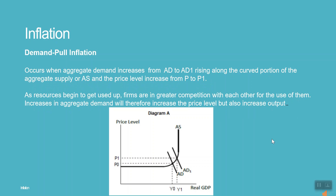Demand-pull inflation occurs when aggregate demand increases from AD to AD1, rising along the curved portion of the aggregate supply, or AS, and the price level increases from P to P1. As resources begin to get used up, firms are in greater competition with each other for the use of them. Increases in aggregate demand will therefore increase the price level but also increase output.